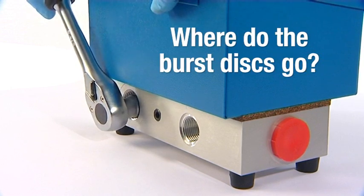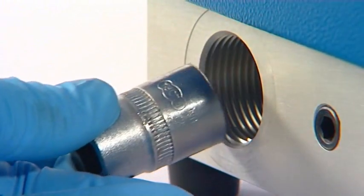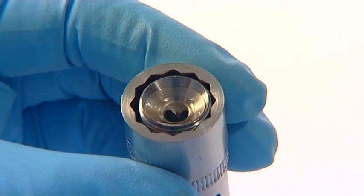Once ruptured, the burst disks are safely contained inside the burst disk holder and can easily be removed and replaced with a new pair of disks at a convenient time.